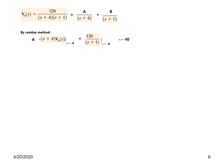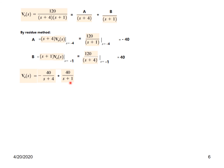Similarly, to find B, we multiply by the denominator of B, which is (S + 1), and set S = −1. This gives 120 divided by (S + 4). Putting S = −1, the denominator becomes +3, so B = 120 divided by 3 = 40. Therefore V0(S) = −40 over (S + 4) plus 40 over (S + 1).